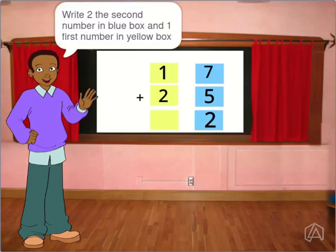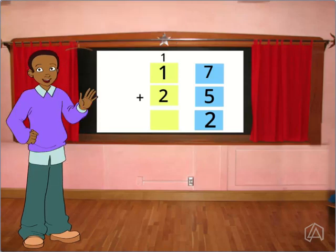Write 2, the second number, in the blue box and 1, the first number, in the second box.